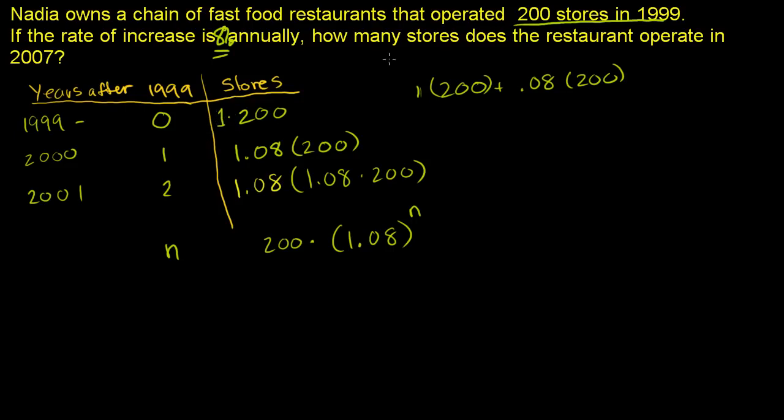So they're asking us, how many stores does the restaurant operate in 2007? Well, 2007 is 8 years after 1999. So here, n is equal to 8. So let us substitute n equals 8. The answer to our question will be 200 times 1.08 to the 8th power.